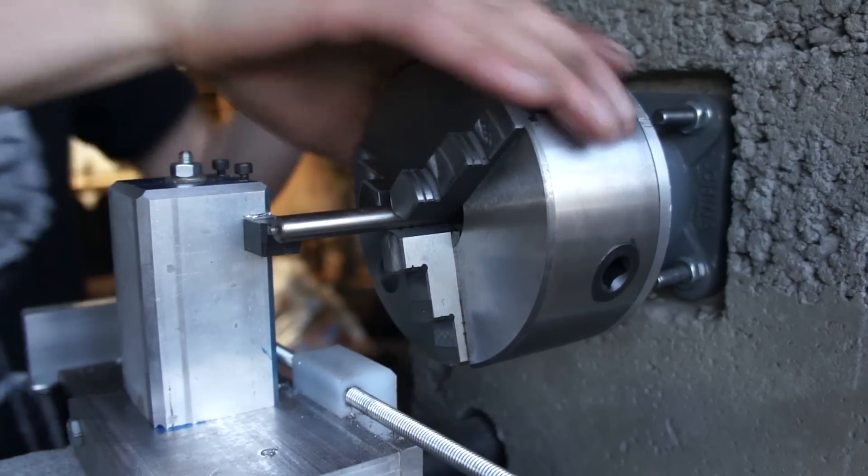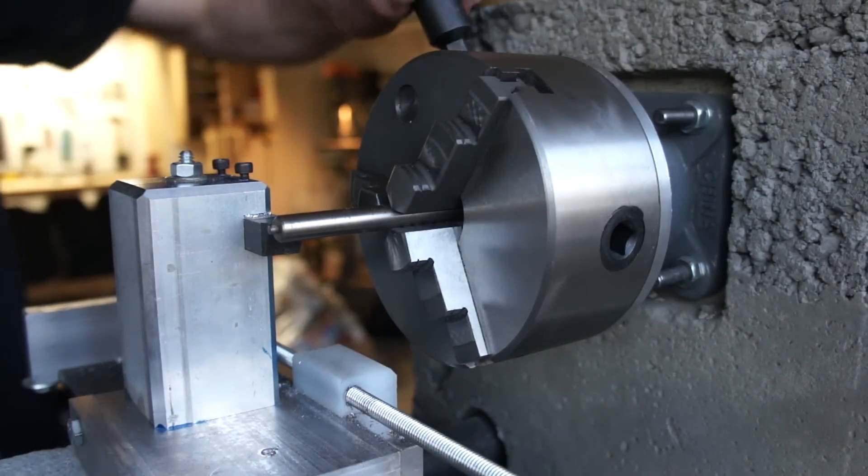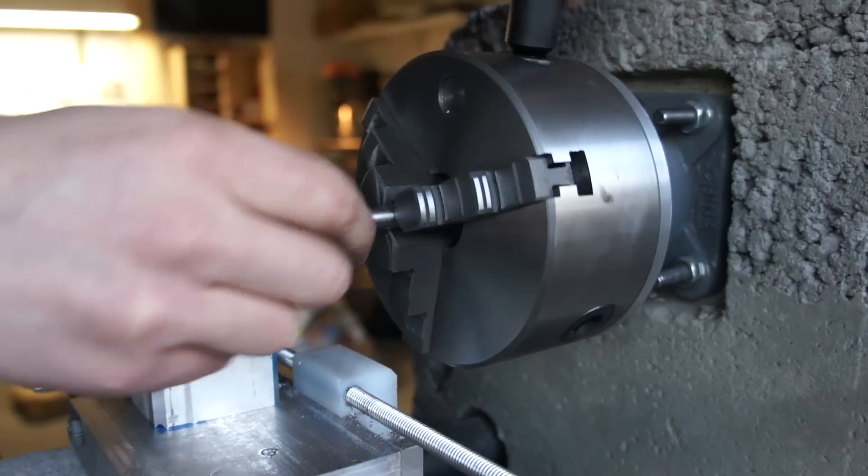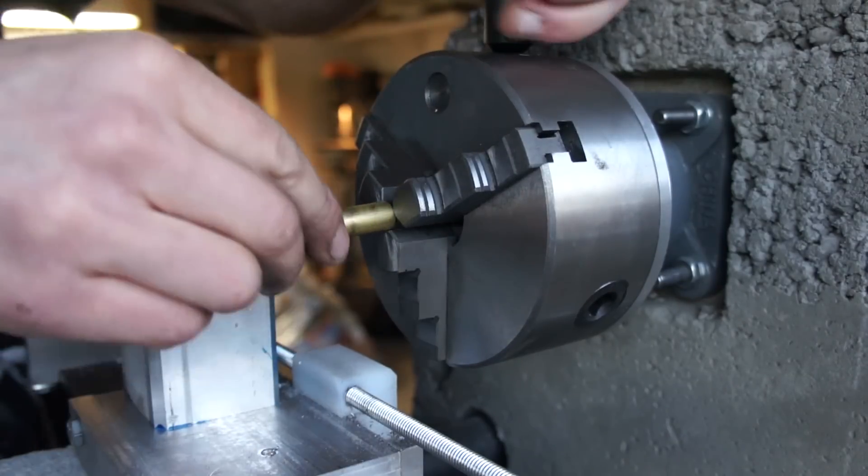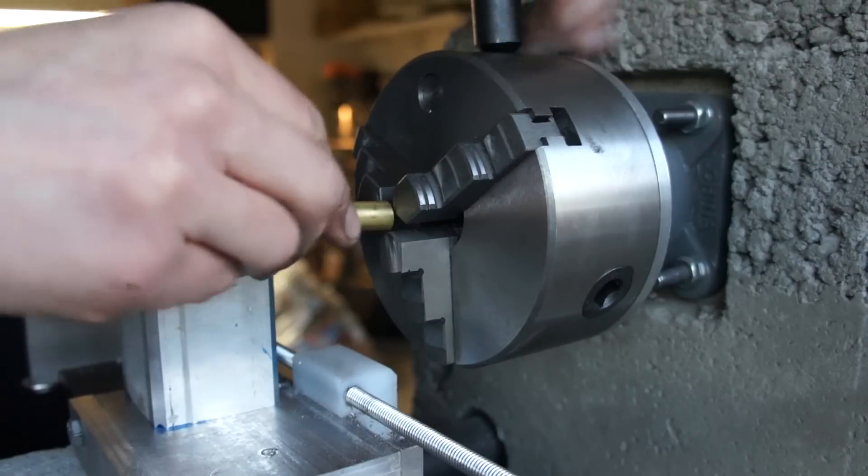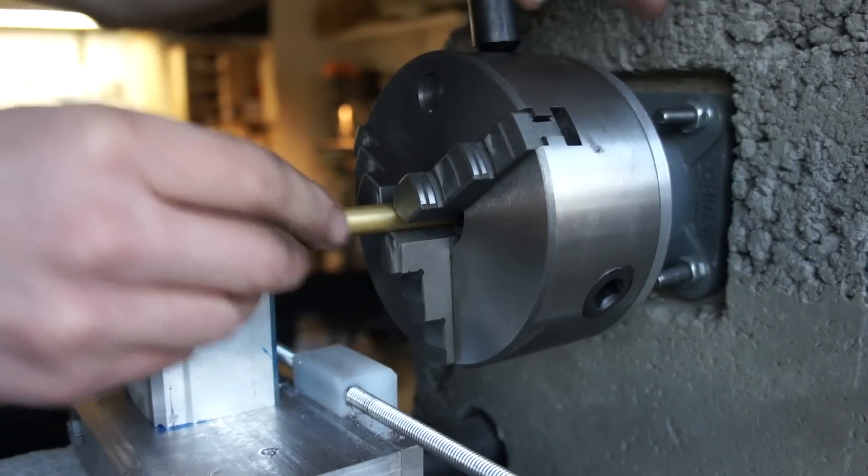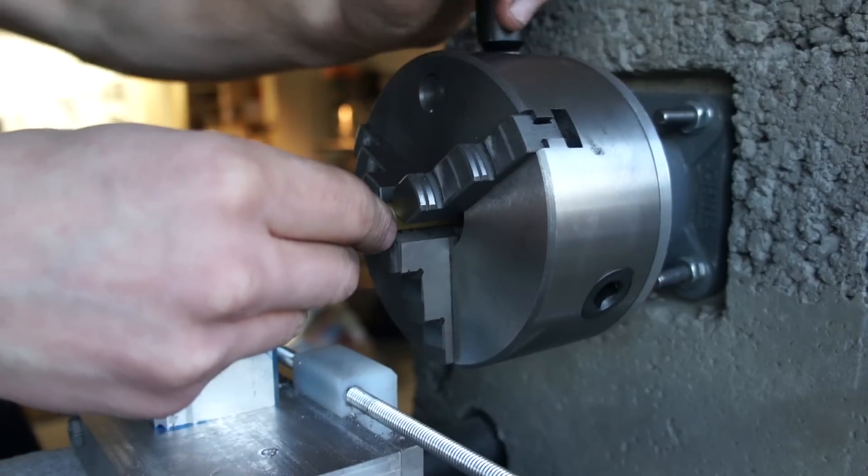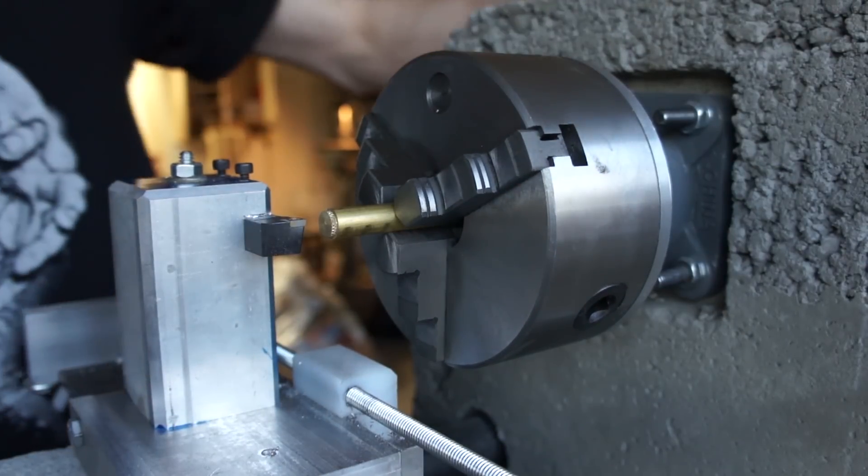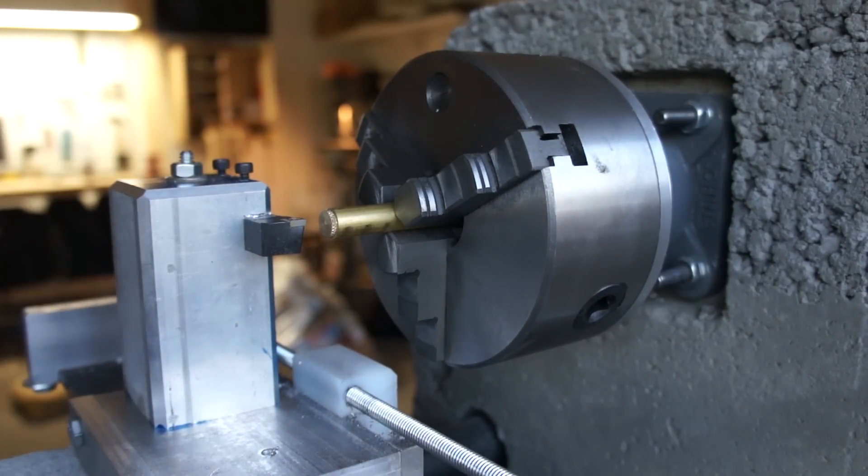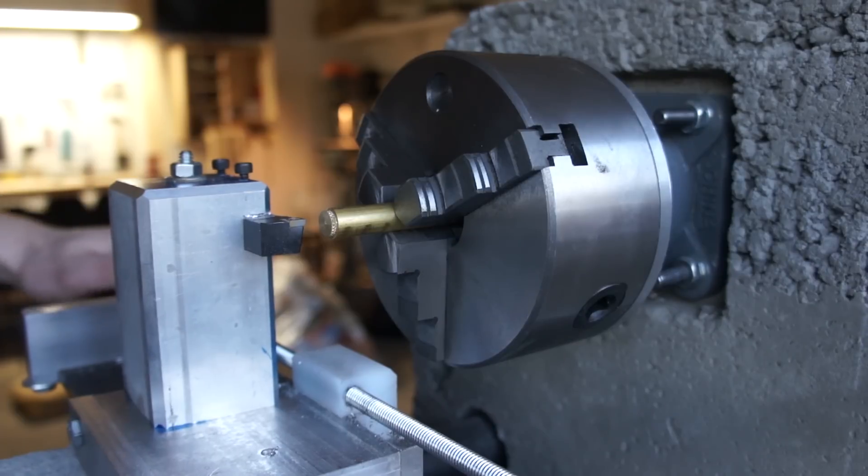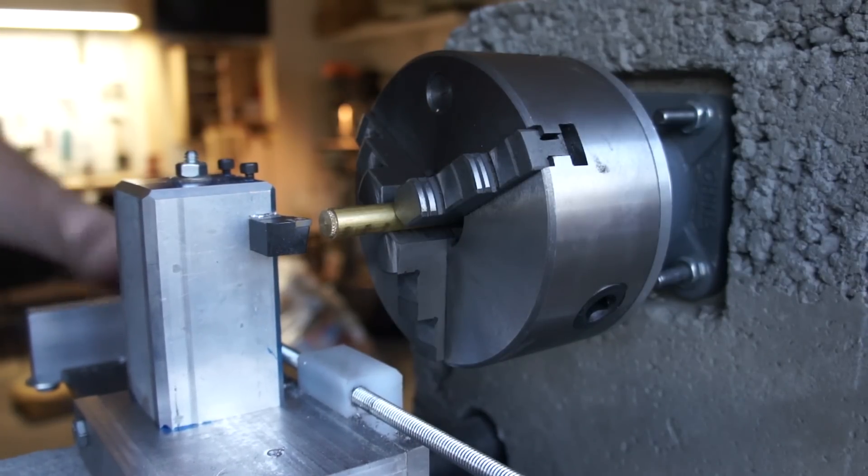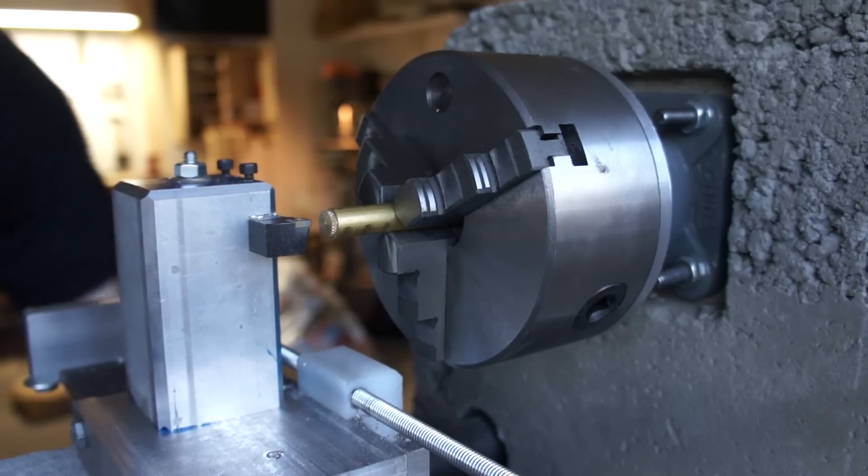All right, let's turn something. This is hardened steel, so I'm not going to turn that, not with this insert anyways. It is not meant for it. So this is just C360 brass, your standard brass. Let's see how it turns.